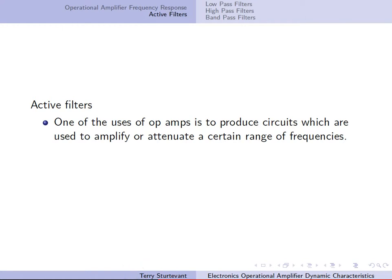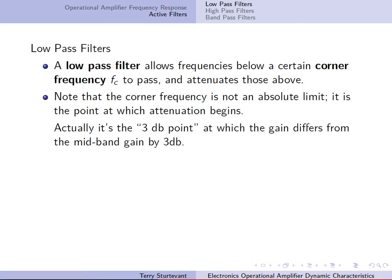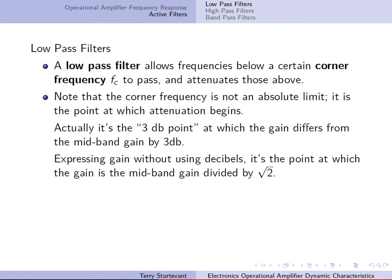One of the uses of op-amps is to produce circuits used to amplify or attenuate a certain range of frequencies — these are called active filters. A low-pass filter allows frequencies below a certain corner frequency to pass and attenuates those above. The corner frequency isn't really an absolute limit; it's actually defined as the 3 dB point at which the gain differs from the mid-band gain by 3 dB — or about 70% of the mid-band gain when expressed as a ratio.